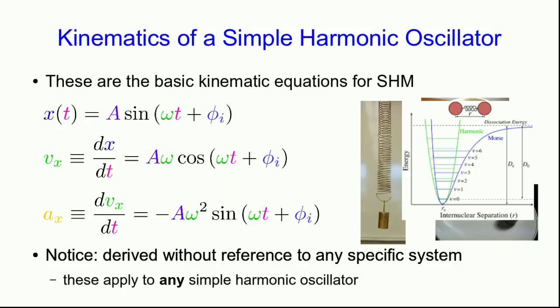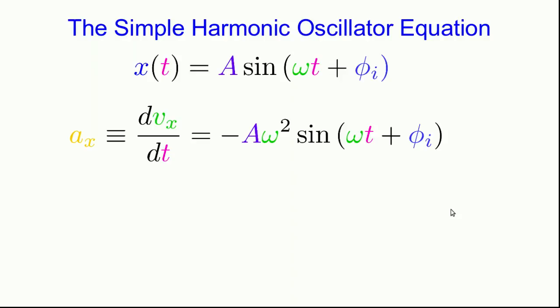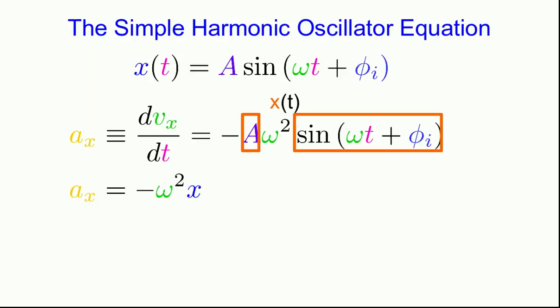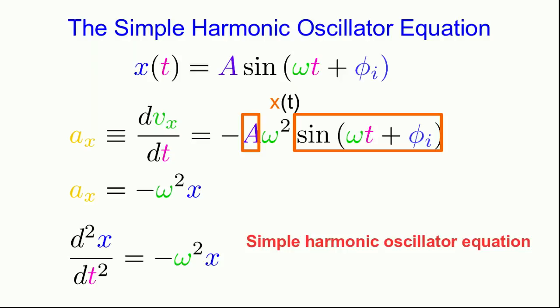Focusing on the position and acceleration equations: the acceleration contains a sine of the phase, which is just x. So we can rewrite the acceleration as negative omega squared times x. Since acceleration is the second derivative of position, this relates position as a function of time to its own second derivative. This important equation is called the simple harmonic oscillator equation — for any system, if you can show it follows this equation, you've shown it behaves like a simple harmonic oscillator with sinusoidal solutions.